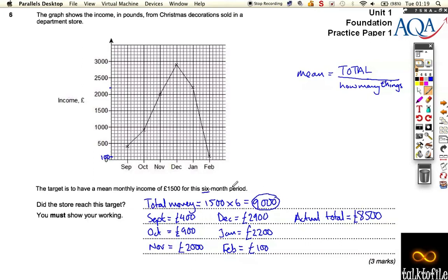If they did £8,500, the mean of what they actually took was £8,500 divided by 6. And that comes out, it actually comes out as some horrible number. It comes out as £1,416.67.